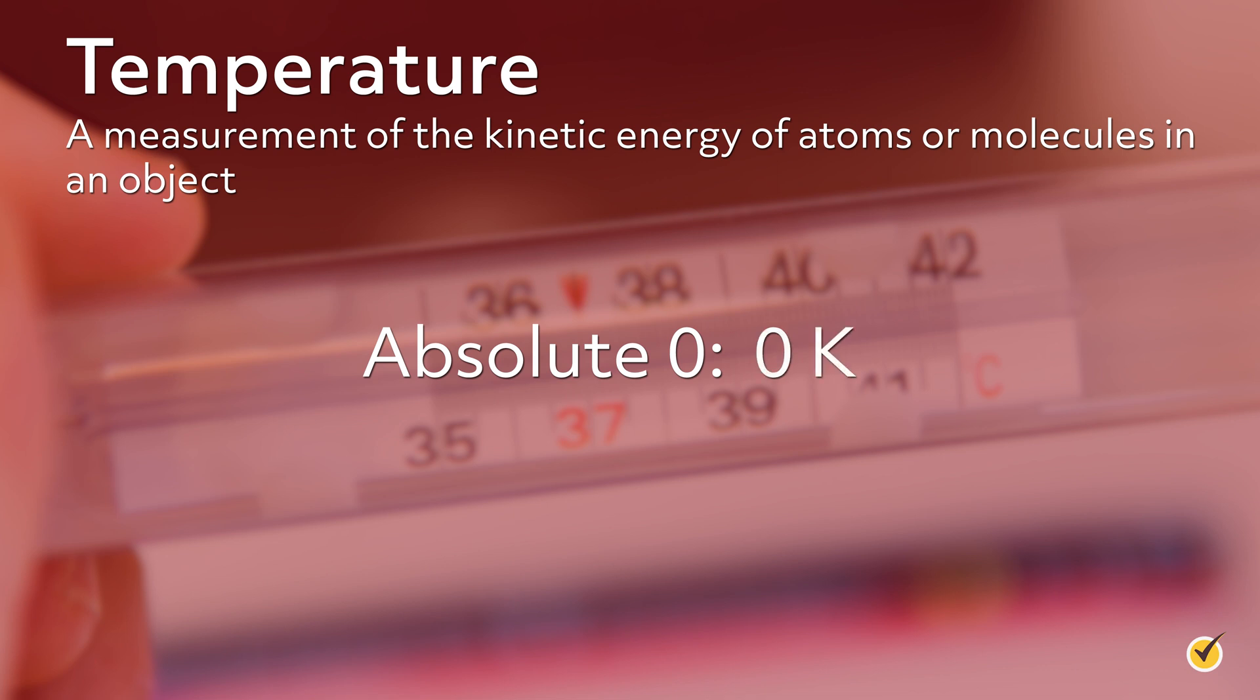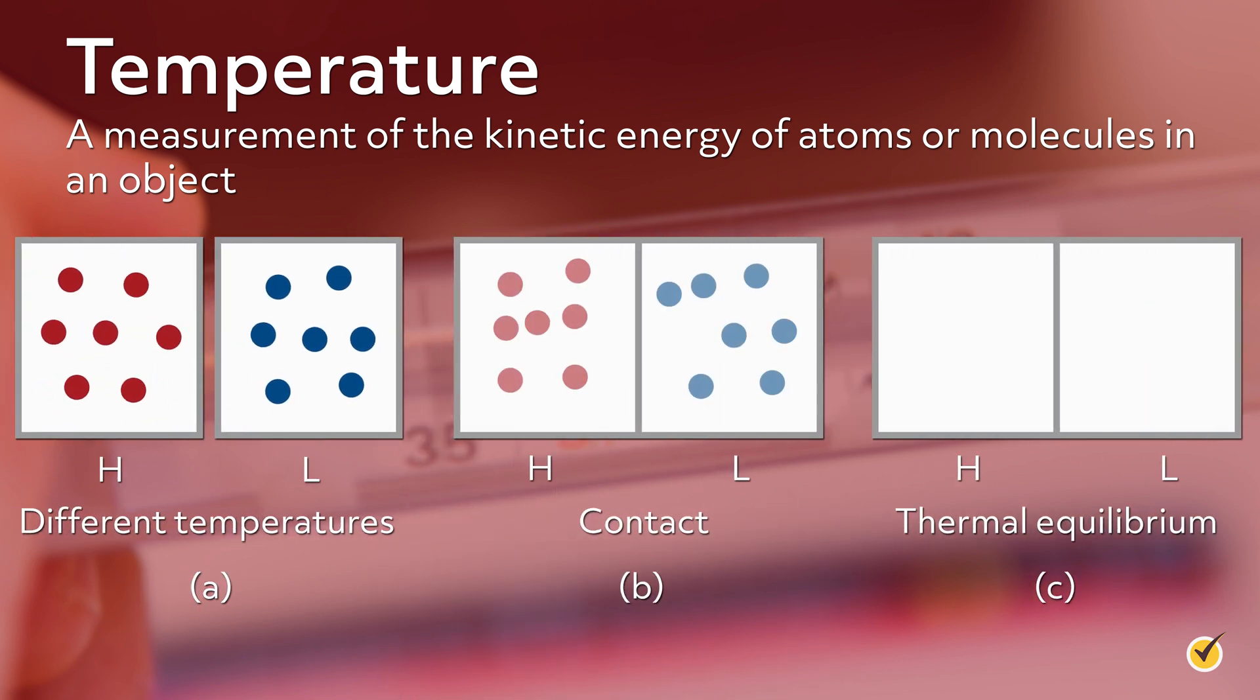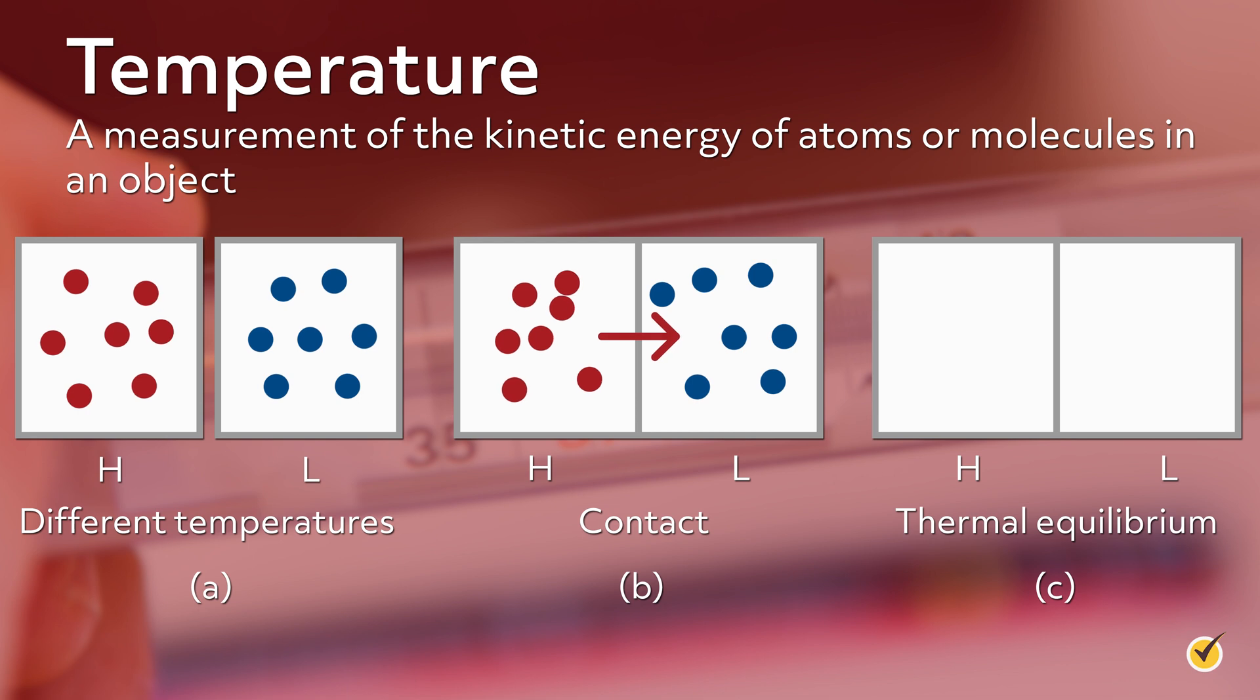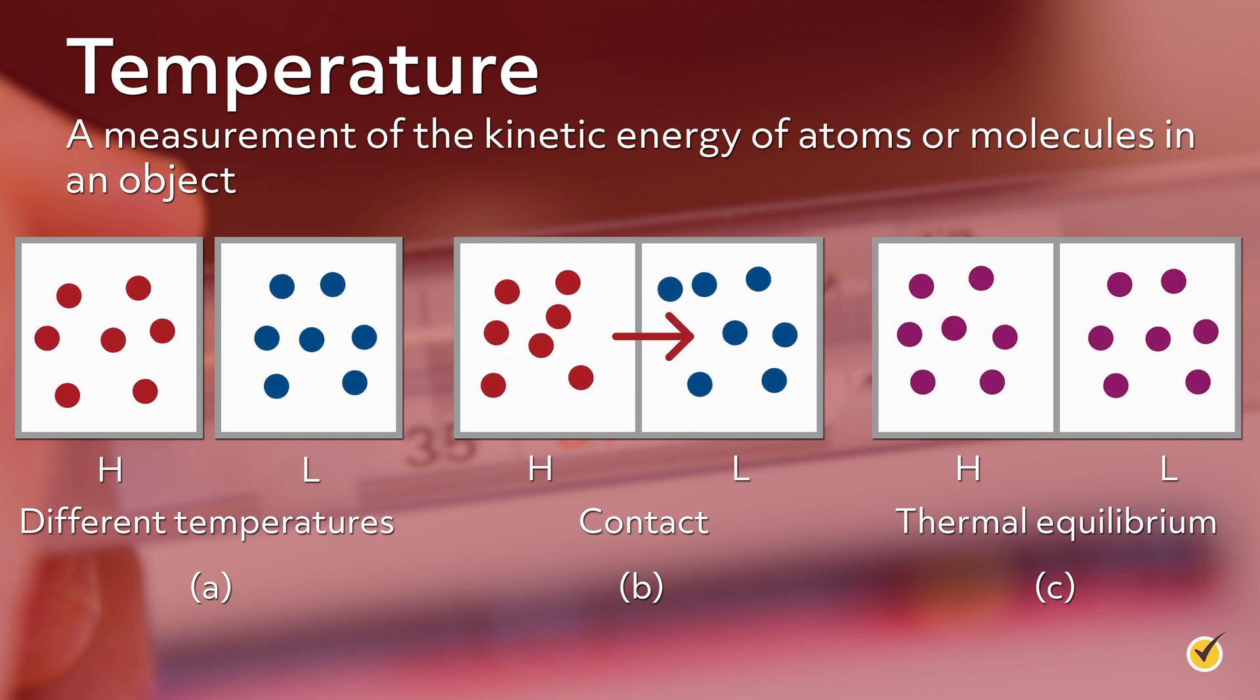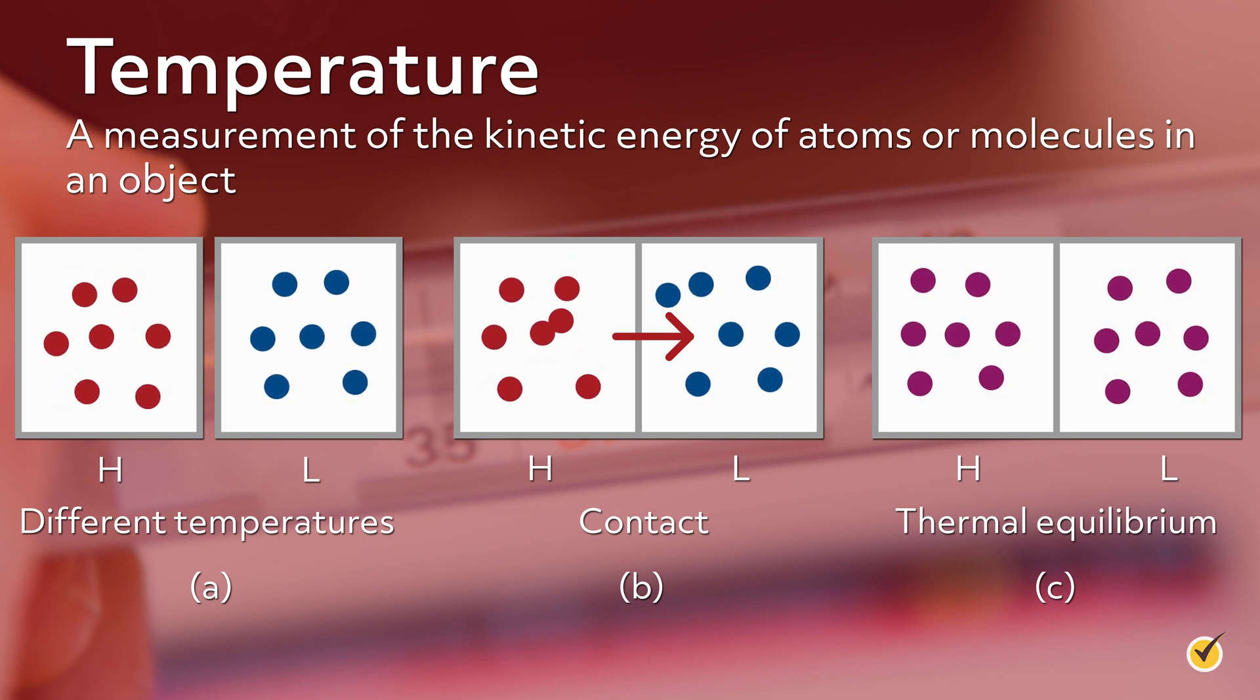When two objects of different temperatures come into contact, the higher energy particles, the hotter particles, will give energy to the lower energy particles until they all reach thermal equilibrium. In other words, the heat will spread out evenly until the two objects are at the same temperature.